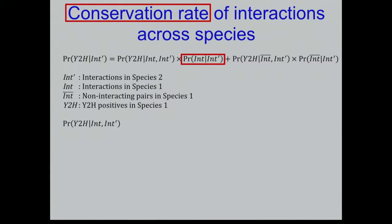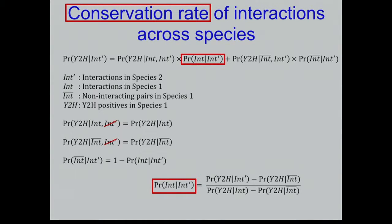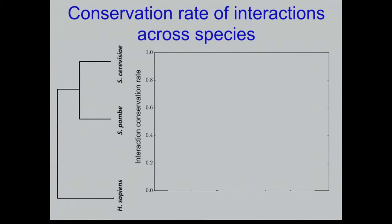Making the reasonable assumption that the probability of detecting an interaction in species 1 is independent of whether that interaction is conserved in another species, we can solve for the true conservation rate. We have the observed conservation rate, and then we just need the false positive and false negative rates from positive and negative controls. We can also estimate the error in our estimate using the delta method.